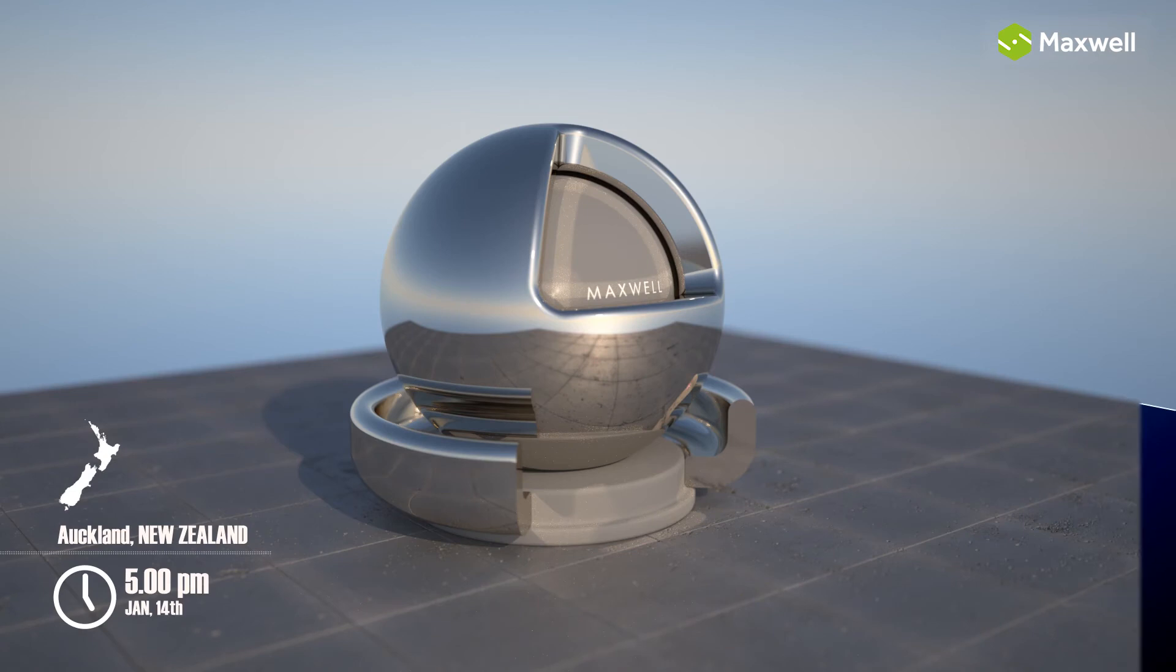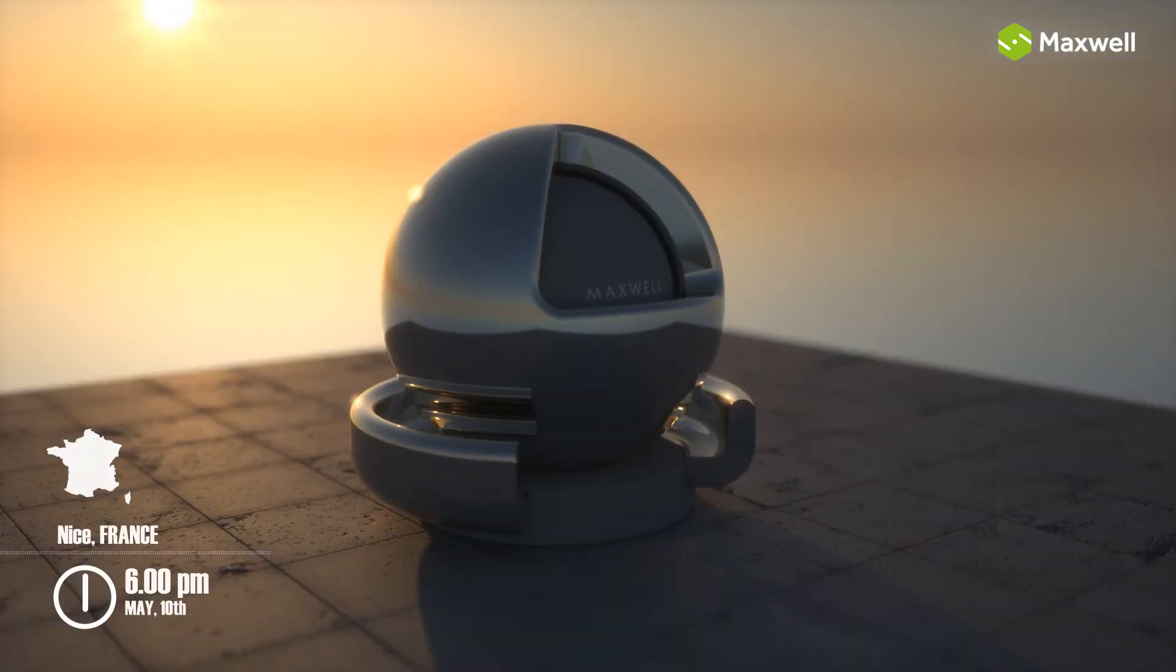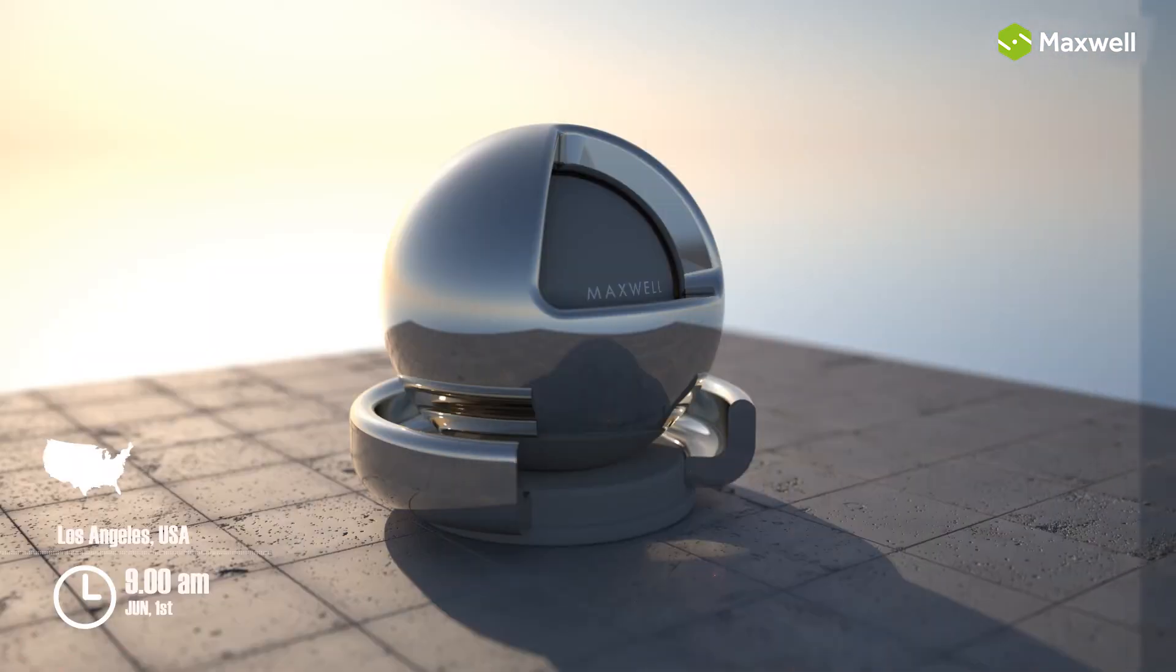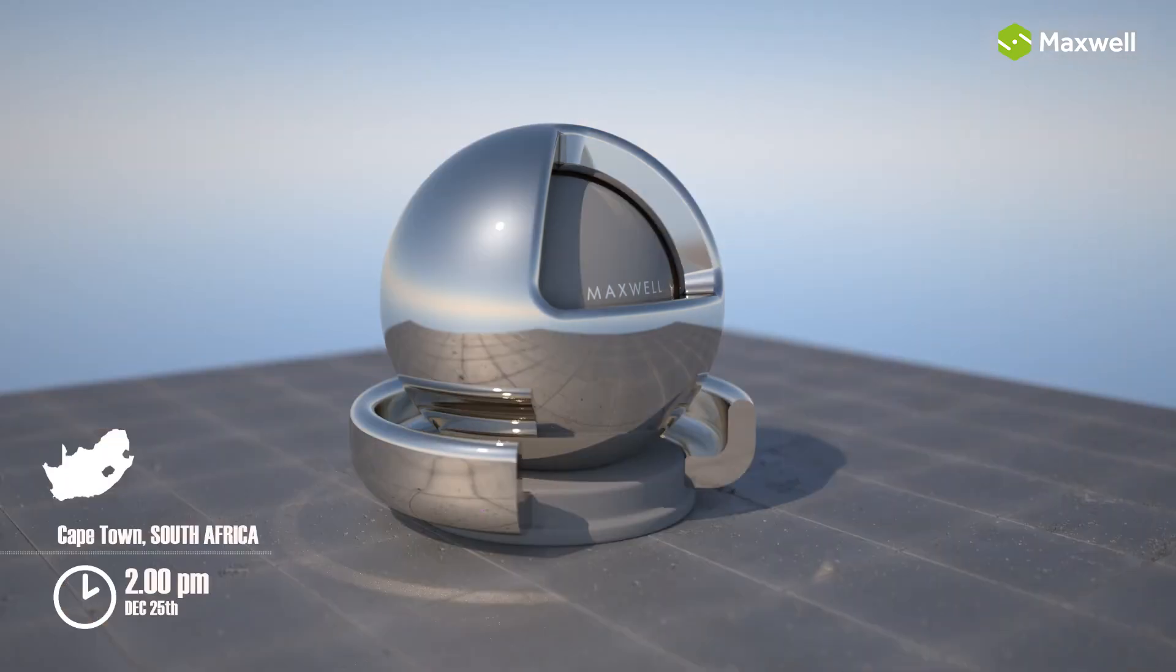Maxwell Render provides a complete physical sky system with a sophisticated atmosphere model that reproduces skylight conditions at different hours, dates, and locations. The physical sky system is a simple way to obtain extremely accurate lighting in your scenes.